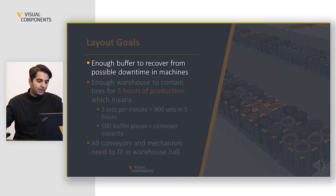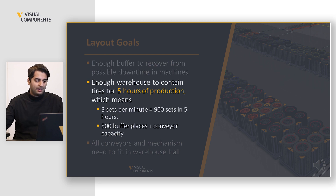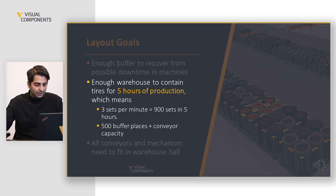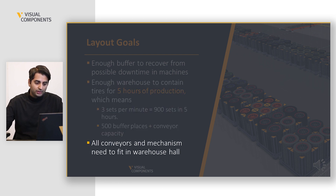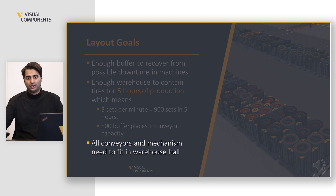Based on the production goals, we also have some layout goals. First, there must be enough buffer to recover from possible machine downtime. Second, there must be enough warehousing capability to store tires for five hours of production — that means 900 sets should always be available, ensuring any downtime inside the system does not interrupt the downstream supply. The last goal is that we need enough conveyor capabilities to handle this many tires.